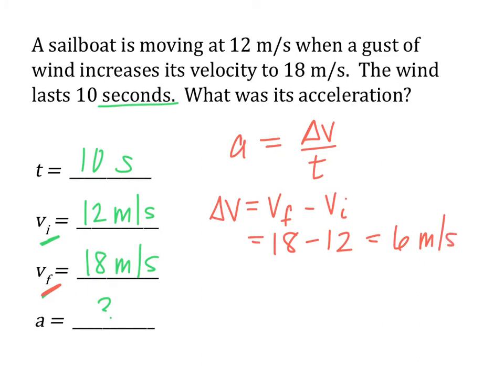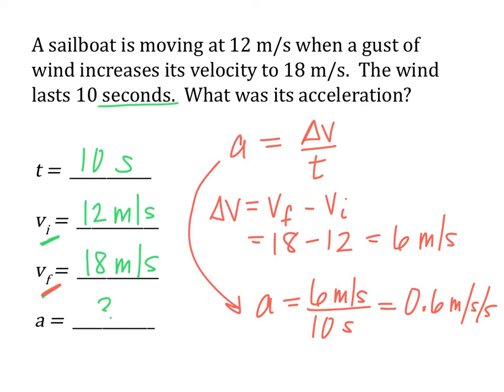And then we can finish off the problem and say that our acceleration would be 6 meters per second divided by our time of 10 seconds. Again, those seconds do not cancel out. They produce this new unit for acceleration meters per second per second or meters per second squared. Either one's fine. Now if you needed to use a calculator to do some of that math, of course that is always fine.